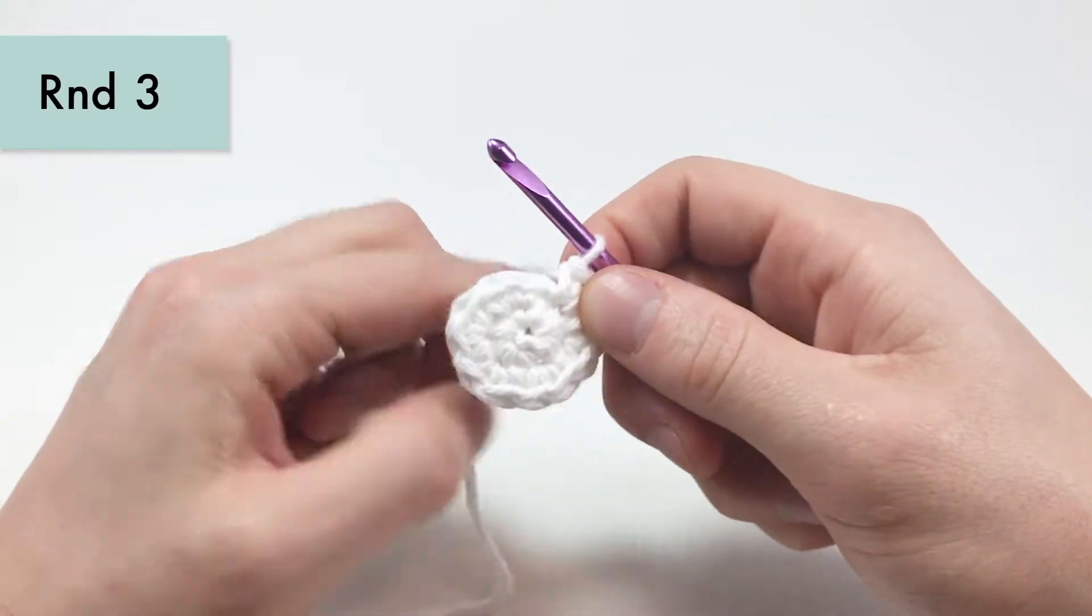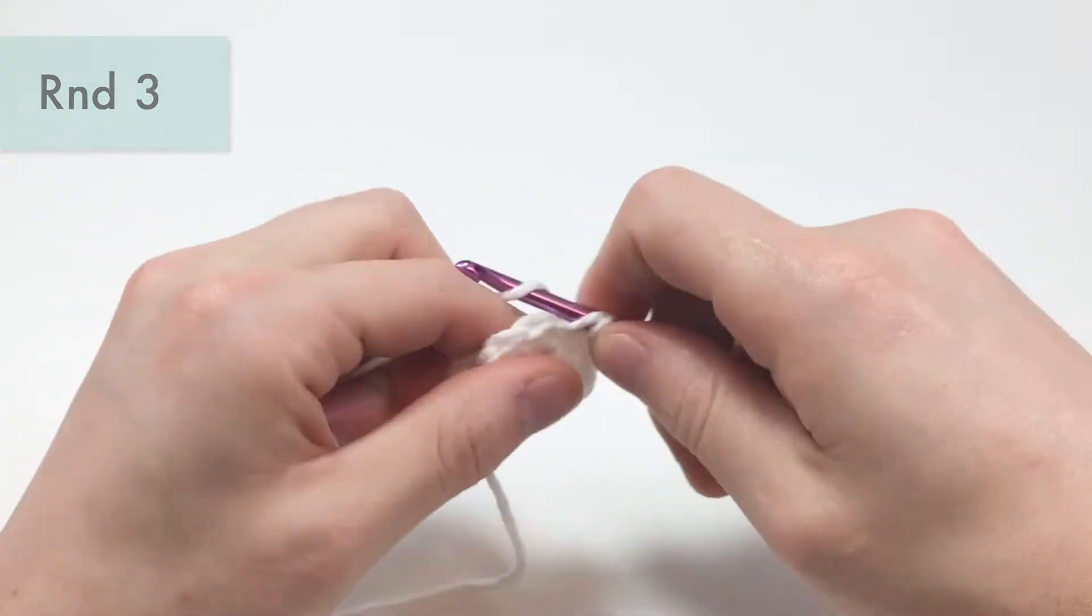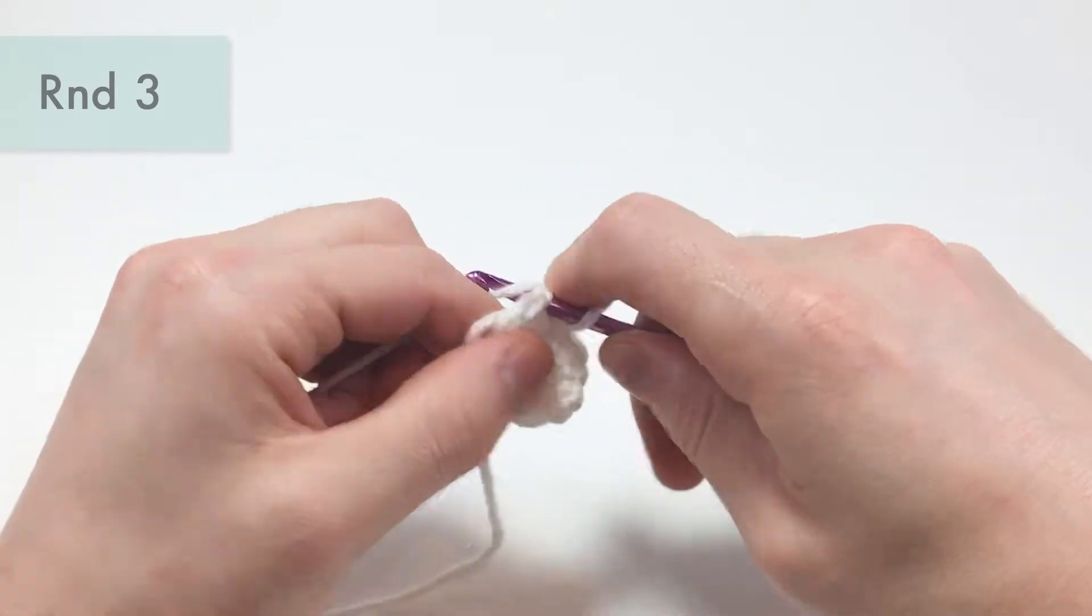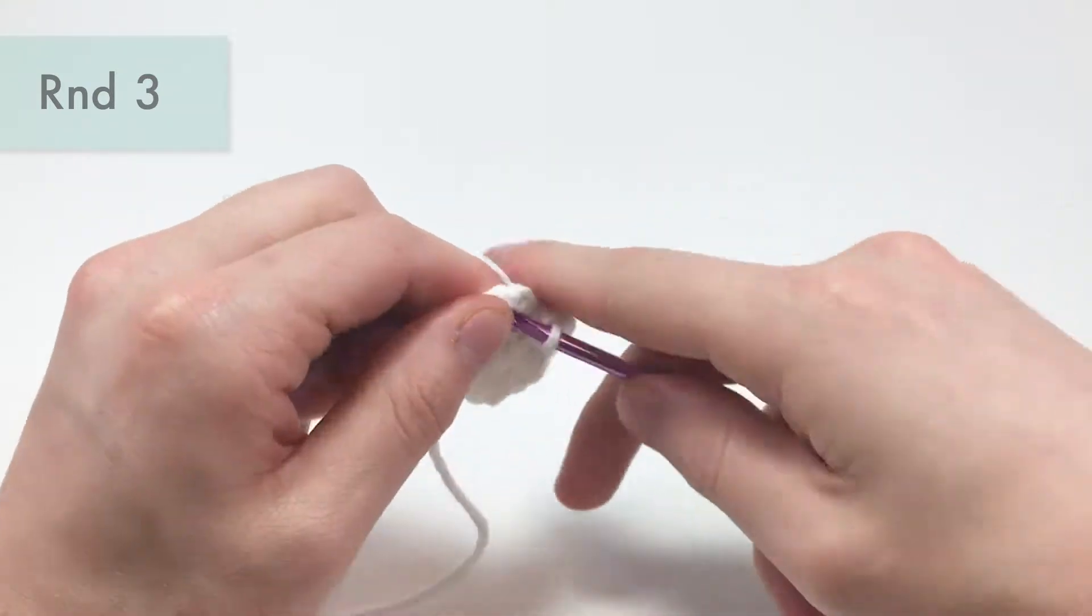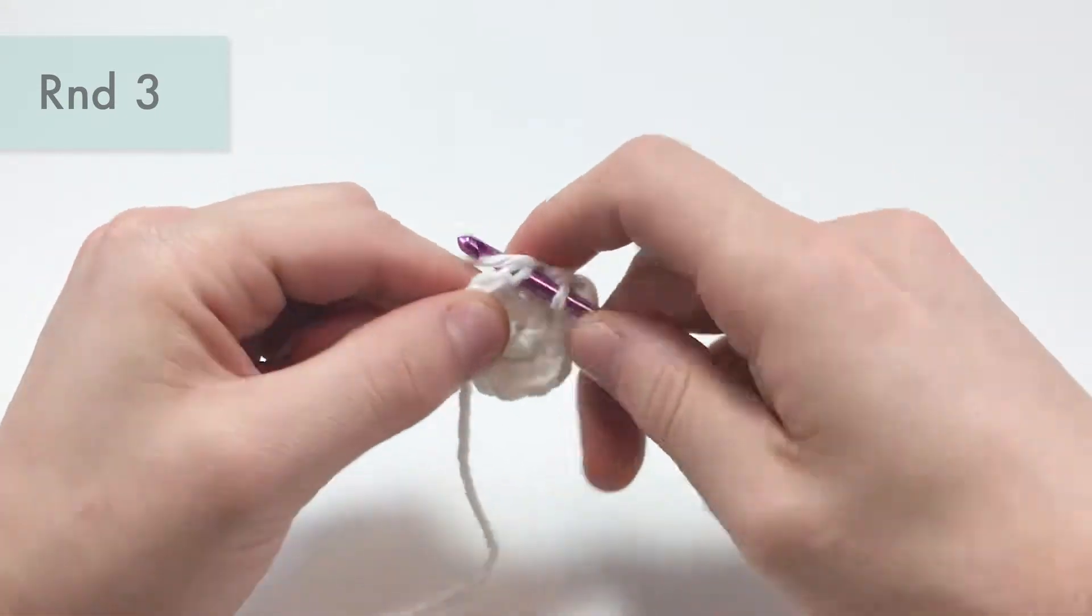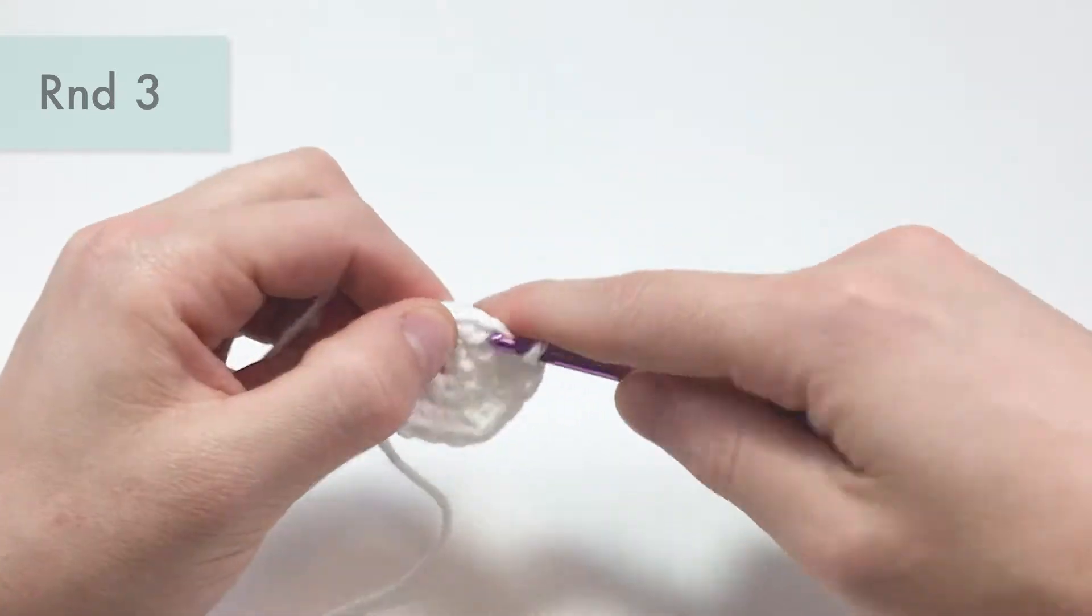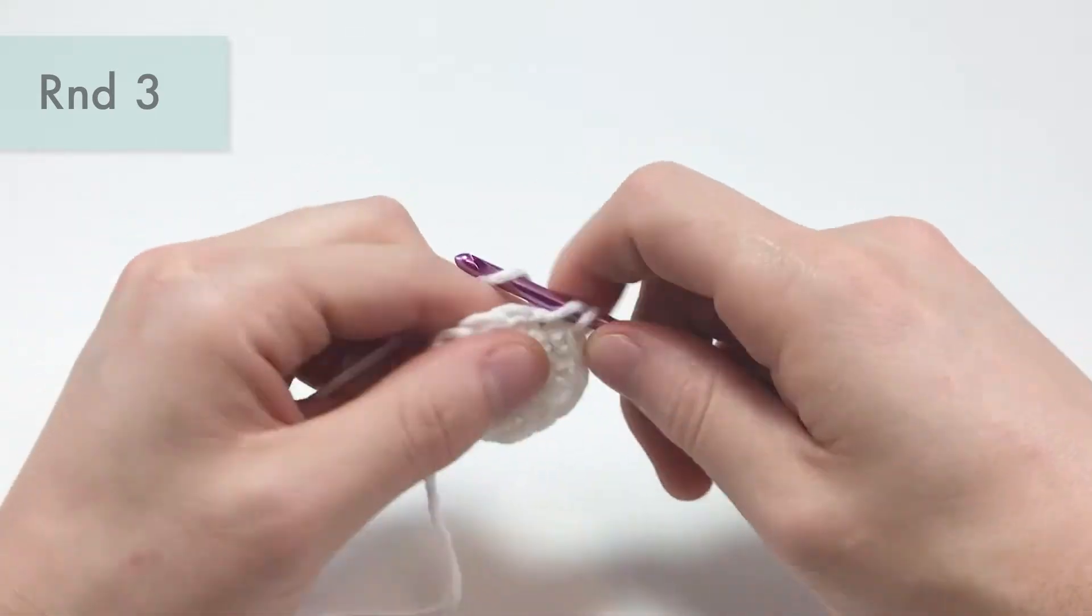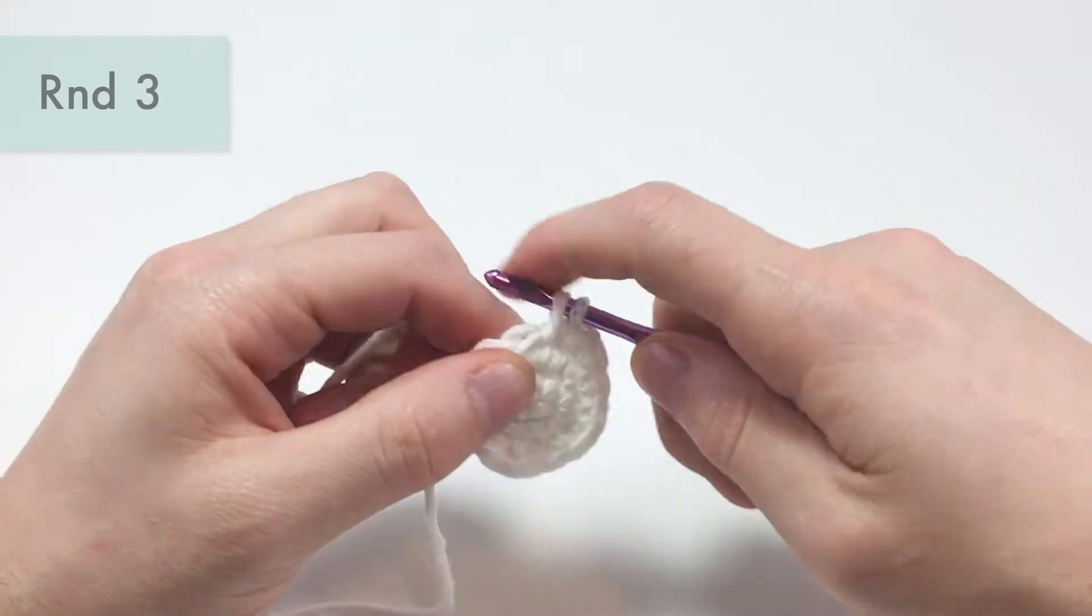For round three, we'll be single crocheting one in the first stitch, and then increasing in the next. Meaning that you single crochet two in the next, and you will repeat that six times total, which will bring us up from 12 stitches to 18. And just so you know, my patterns all have a time code to each of the rounds. So if you want to skip to a specific round, there are links in the description below on YouTube.